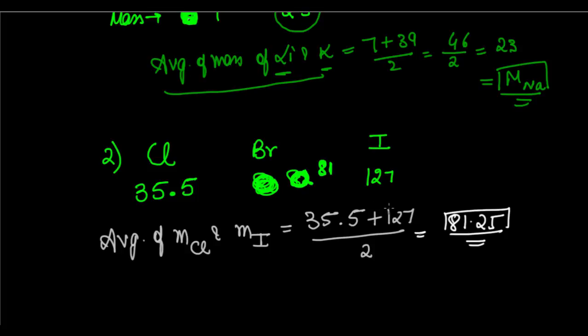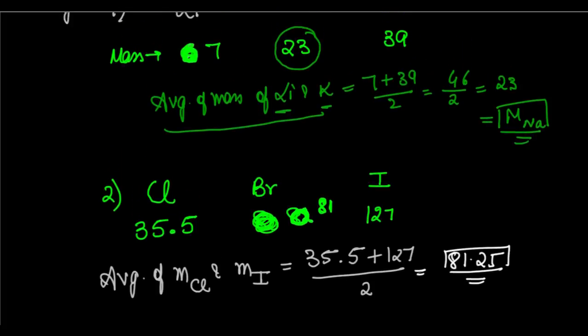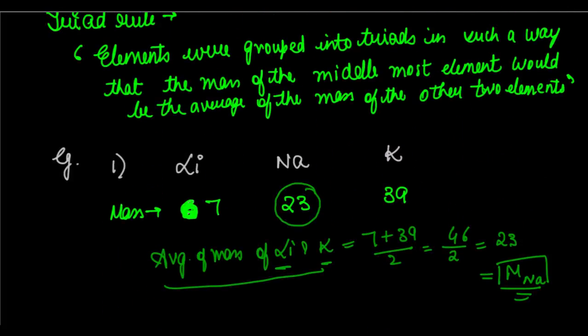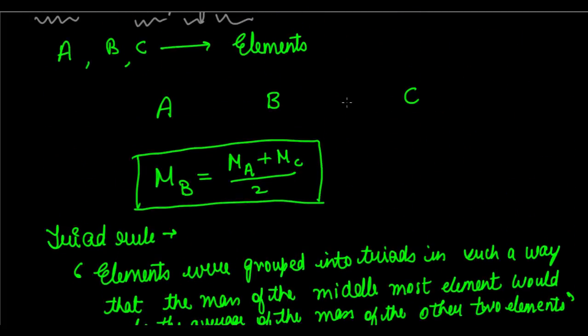So I hope you understand the triad law: elements were grouped into groups of three in such a way that the mass of the middlemost element would be equal to the average of the mass of the other two elements. This is a perfect representation of that — for A, B, C, mass of B equals mass of A plus mass of C divided by 2.